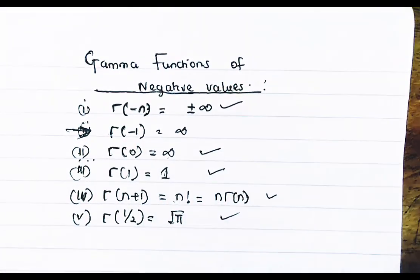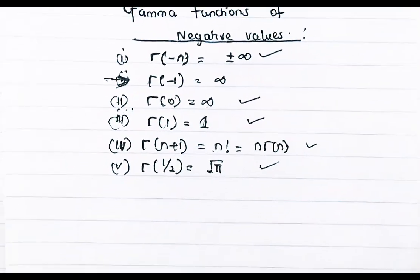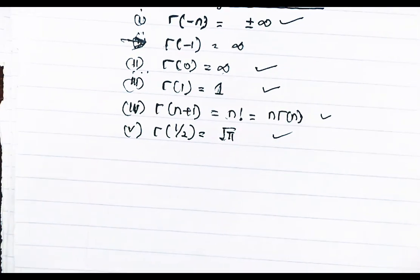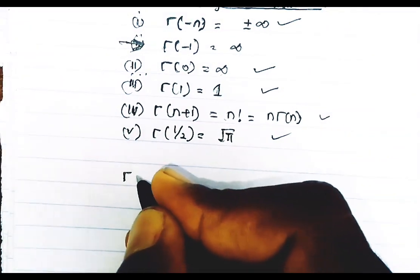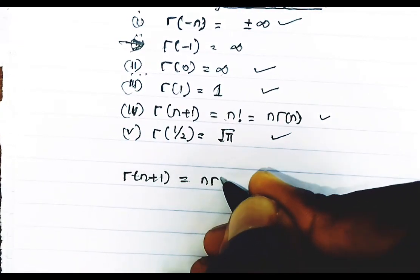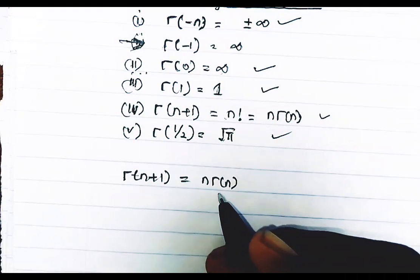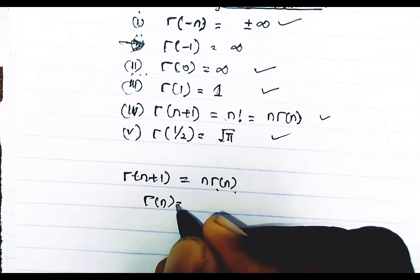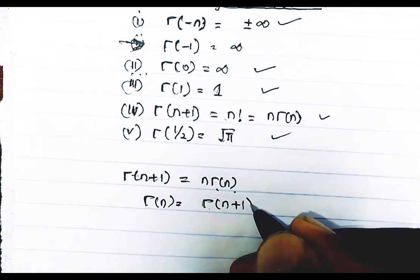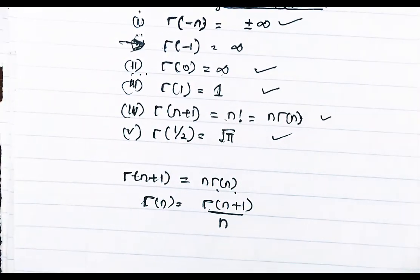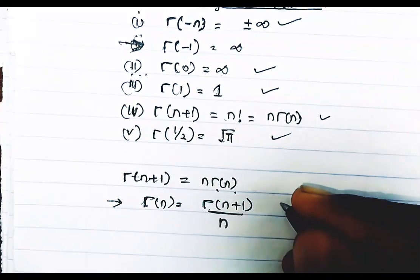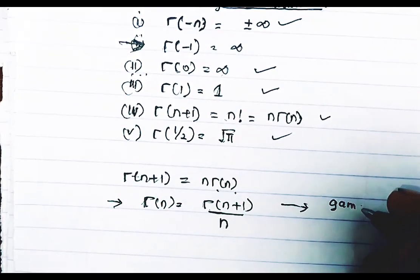Lastly, gamma of one-half equals root pi. Put this in your head because you'll be needing it for various problems on gamma functions. Now, to solve gamma function of negative fractional values, we'll be using the formula: gamma of n equals gamma of n plus one divided by n. It's not a new formula — we're just rearranging what we already knew.